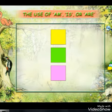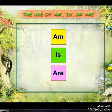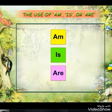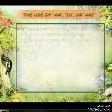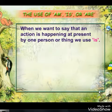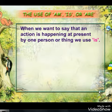The use of am, is, and are. We have already learnt about verbs in the last chapter. Now we will learn about helping verbs. When we want to say that an action is happening at present by one person or thing, we use is.